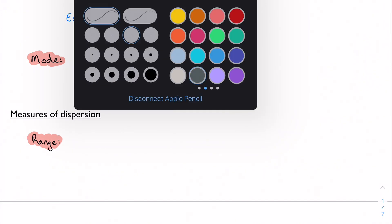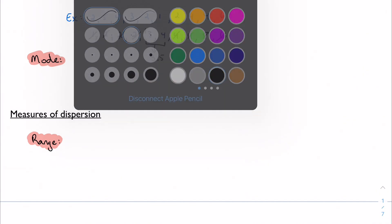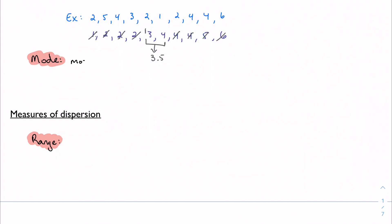And then mode, of course, as we remember, is just whatever the most frequent value is. So in my data set above, I actually have two modes, and that's okay. Most frequent value or values. So here I actually have two modes, and that's 2 and 4. Both of those appear three times.